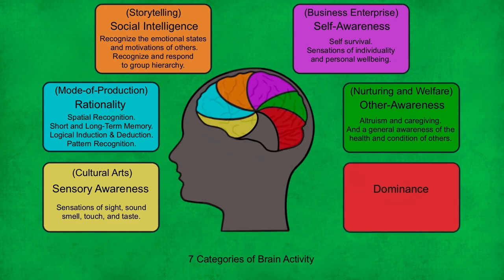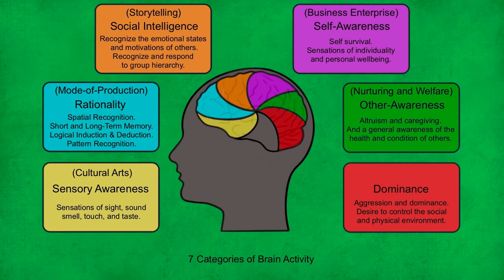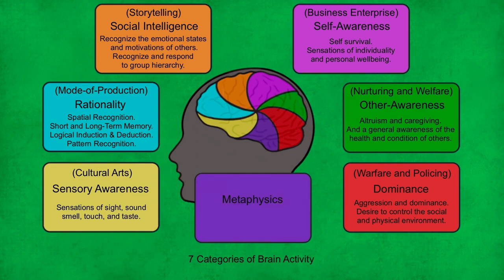Next we have areas of the human brain associated with dominance. From an individual point of view, these neurochemical processes trigger behaviours such as aggression and dominance. However, from a population perspective, dominance is really about the desire to control the social and physical environment — manifesting as all the warfare and policing practices and institutions of human culture. And finally, we have the metaphysics area of the human brain, which is composed of neurochemical processes that are ironically a consequence of rational brain processes. Once humans evolved rationality, they acquired a cognitive awareness of non-rationality, and metaphysics neurochemical processes manifested as the belief systems of a population, with associated rituals and institutions.